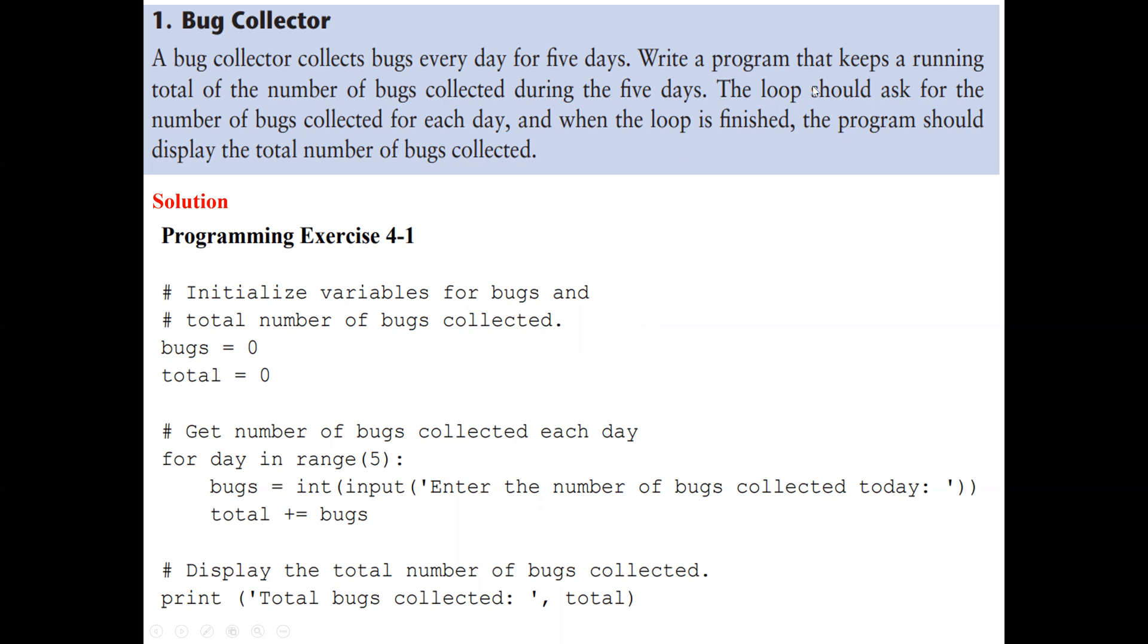The reason why we are using the loop for this question is because we are going to ask the user to enter the number of bugs for five days, so five times. Since we know the number of times we want the loop to run, the best loop to use will be the for loop, then we can use the range function in the for loop. The range, in this case, will be up to five, from zero to four.